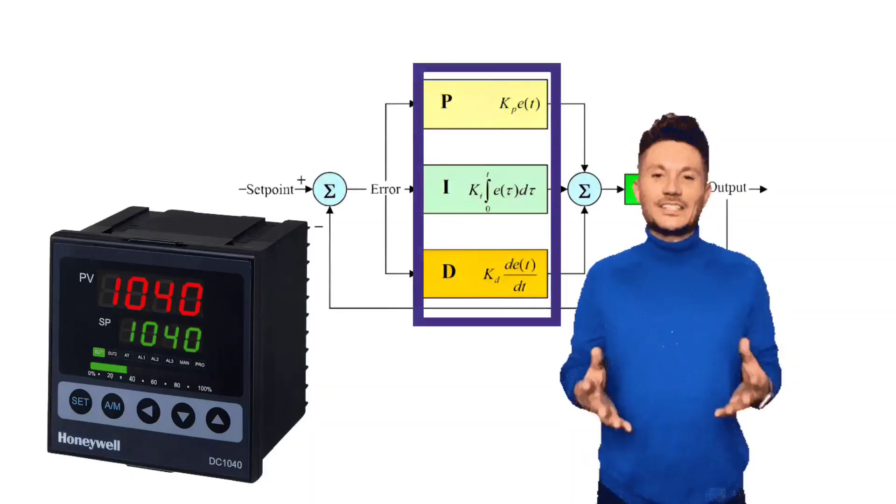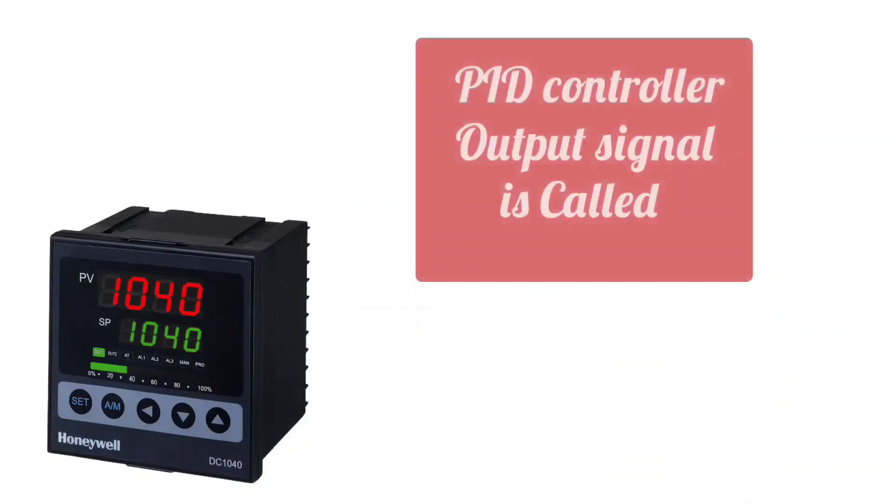P, I, and D. Output signal of PID controller is called control variable.